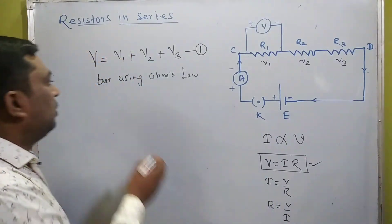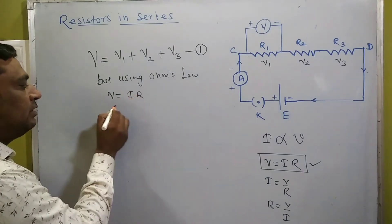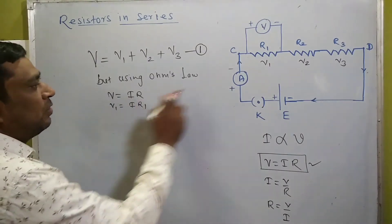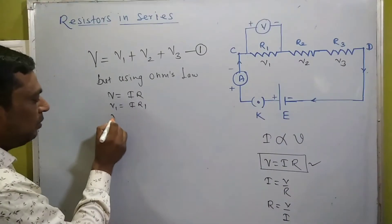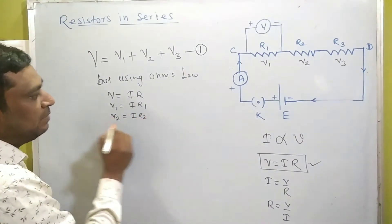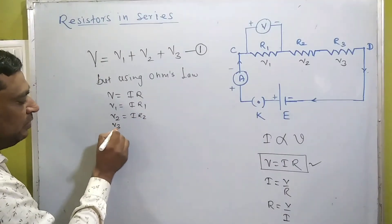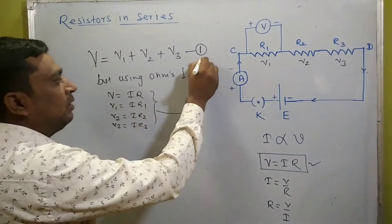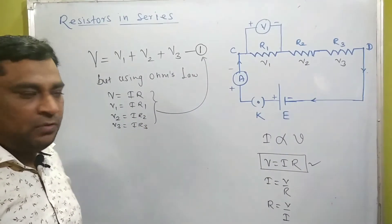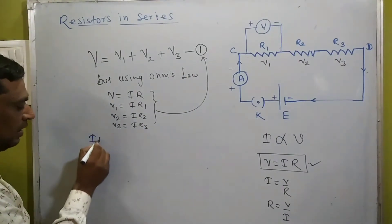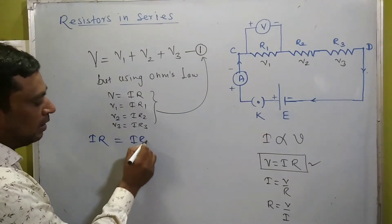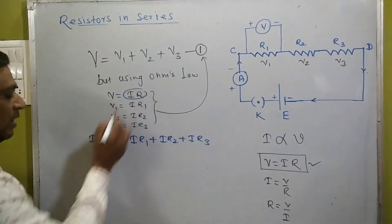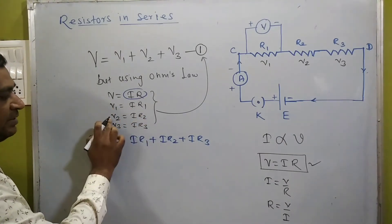So V equals IR. In the same manner, V1 equals IR1 — that is the voltage drop across R1. V2 equals IR2 — the voltage drop across R2. And V3 equals IR3. Now we put all these values into equation number one. It becomes: IR equals IR1 plus IR2 plus IR3.